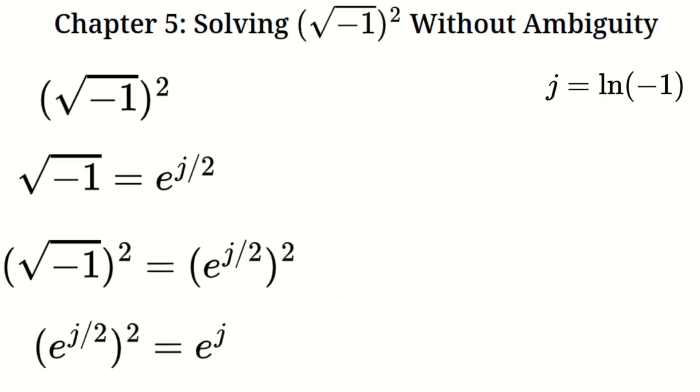Simplify the exponent e raised to the power of j over two squared equals e raised to the power of j. From the definition of j, we know e raised to the power of j equals negative one. Therefore, the square of the square root of negative one equals negative one. No contradictions, no ambiguities, just pure logic.